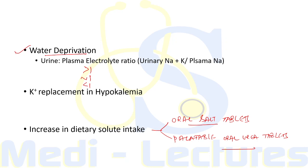Water deprivation has long been a cornerstone therapy for hyponatremia but is difficult in SIADH because thirst is also inappropriately stimulated. The urine-to-plasma electrolyte ratio — urinary (sodium + potassium) divided by plasma sodium — is used as a quick indicator of electrolyte-free water excretion. If this ratio is greater than 1, restrict water to less than 500 mL/day; if approximately 1, restrict to 500–700 mL/day; if less than 1, restrict to less than 1 liter/day — inversely proportional to water intake restriction.